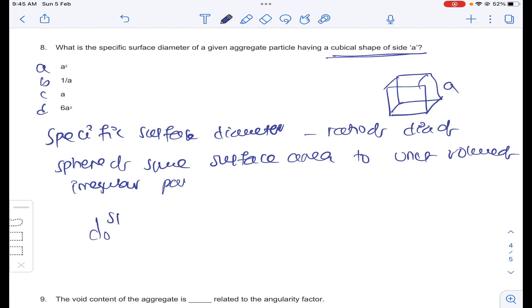That is D_SP. Specific surface diameter is equal to 6 times V_P divided by A_P. That is 6 times volume of the particle is A cubed and the surface area is 6A squared. So it will be A. Answer C for question number 8.